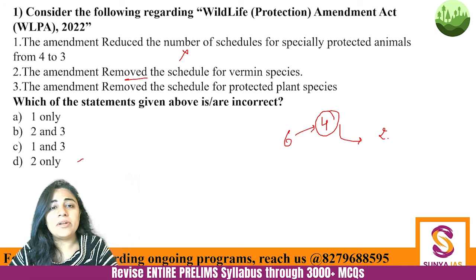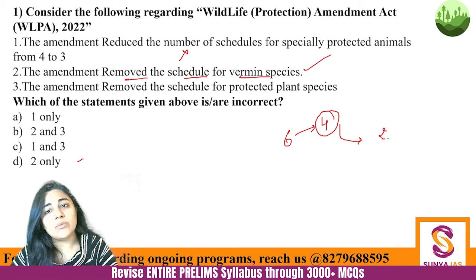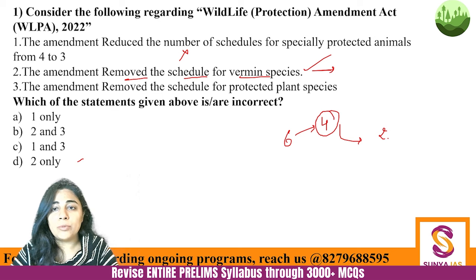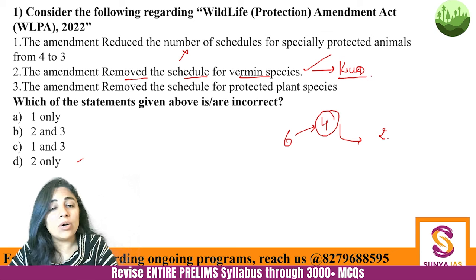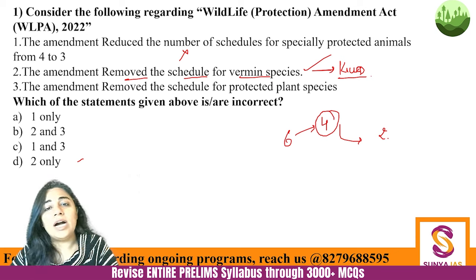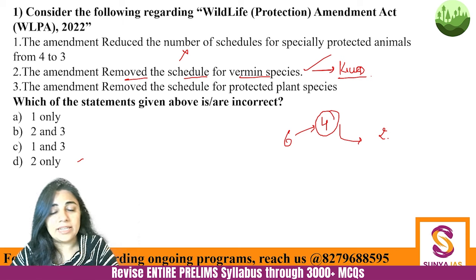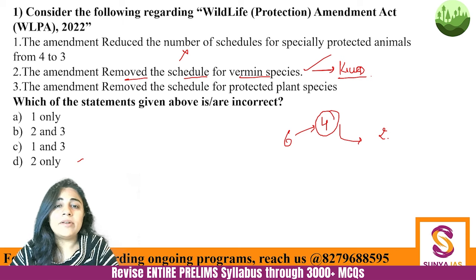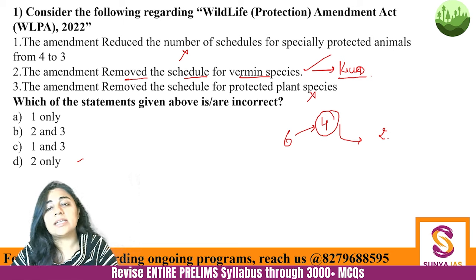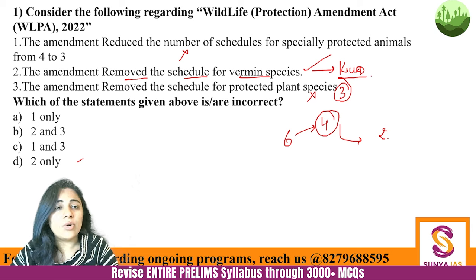The amendment did remove the schedule for vermin species — those species which could be killed because they were harmful to human civilization. That schedule is gone. However, the amendment did not remove the schedule for protected plant species; schedule three still exists for plant species. So statements one and three are incorrect.